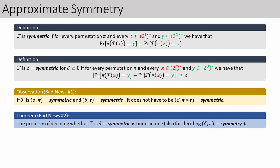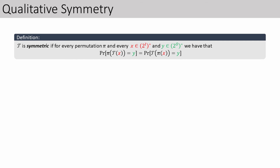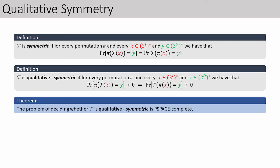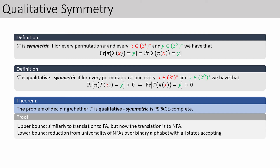One way to keep the idea of approximate symmetry but regain decidability is to further relax the equality of distributions. In qualitative symmetry, instead of requiring that the distributions pi of T of x and T of pi of x are equal, we only require that they have equal supports. That is, for every input word x and output word y, the probability assigned to y by pi of T of x is nonzero if and only if the probability assigned to y by T of pi of x is nonzero. Technically, looking at qualitative symmetry turns the probabilistic nature of the transducer into a nondeterministic one. We then apply a similar construction using nondeterministic finite automata, giving us the theorem that deciding whether a transducer is qualitatively symmetric is PSPACE-complete. For the lower bound, we show a reduction from universality of NFAs over a binary alphabet whose states are all accepting — these restrictions are important, as a quick reduction from universality without them does not seem to work.